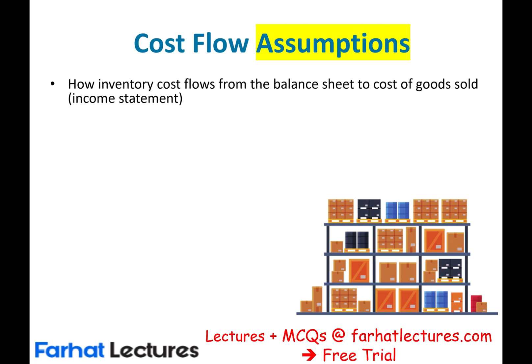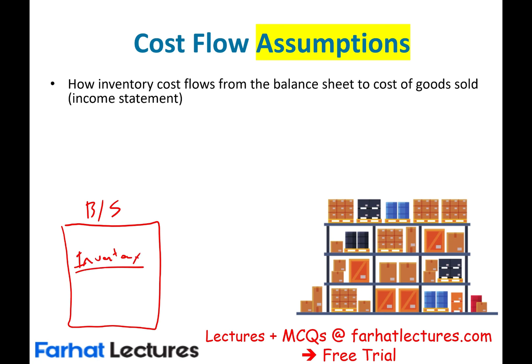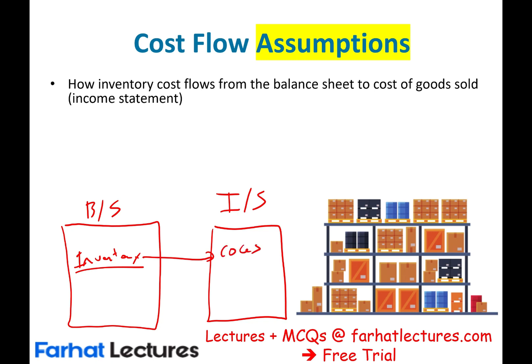When the company purchases inventory — and this topic is very important for merchandisers, in other words, companies like Walmart, Target, and supermarkets — they have the inventory as an asset on the balance sheet. Whatever inventory they have sits on the balance sheet as an asset. Eventually this inventory is sold, and once sold, it becomes cost of goods sold on the income statement. So Cost Flow Assumption is how the inventory flows from the balance sheet to the income statement.